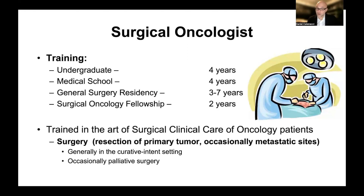In other tumor types, it is more commonplace to remove both the primary tumor and metastatic sites even at stage four — for example, in colon cancer. On the other hand, in gastroesophageal cancer, this is not as standard because the tumor is more aggressive and outcomes aren't as good, so it doesn't justify surgery in a stage four setting. Generally, surgery is performed in the curative intent setting.